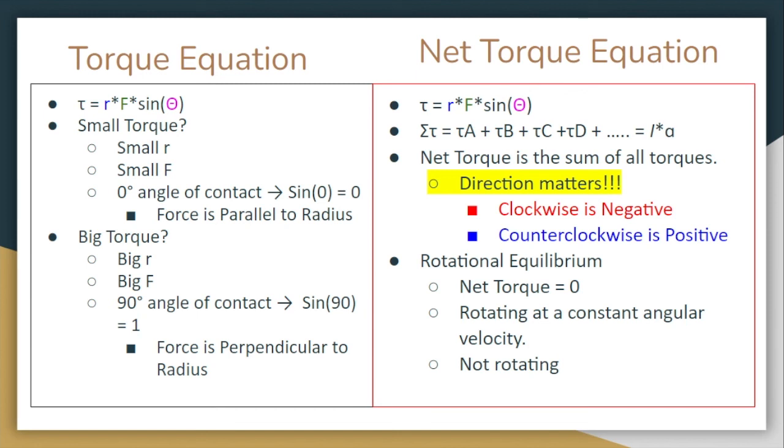Again, rotational equilibrium just means that the net torque is zero. A net torque of zero can give us two things. Option A is that we are no longer rotating and our object is at rest. Or option B is that we are rotating, but we are rotating at a constant angular velocity, meaning that we are not speeding up nor slowing down, which is similar to the equilibrium of net force, because we know that zero net force means that we are either moving at a constant linear velocity or not moving at all. Hopefully, you guys can make the connection between torque and force, and notice how similar they are to each other.